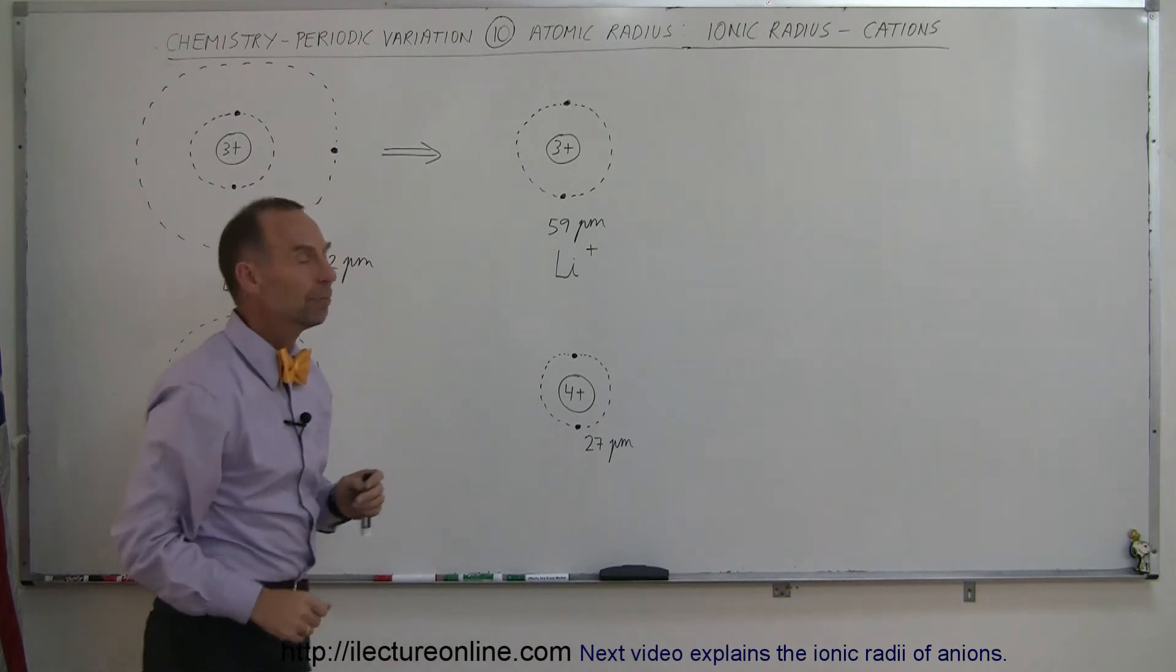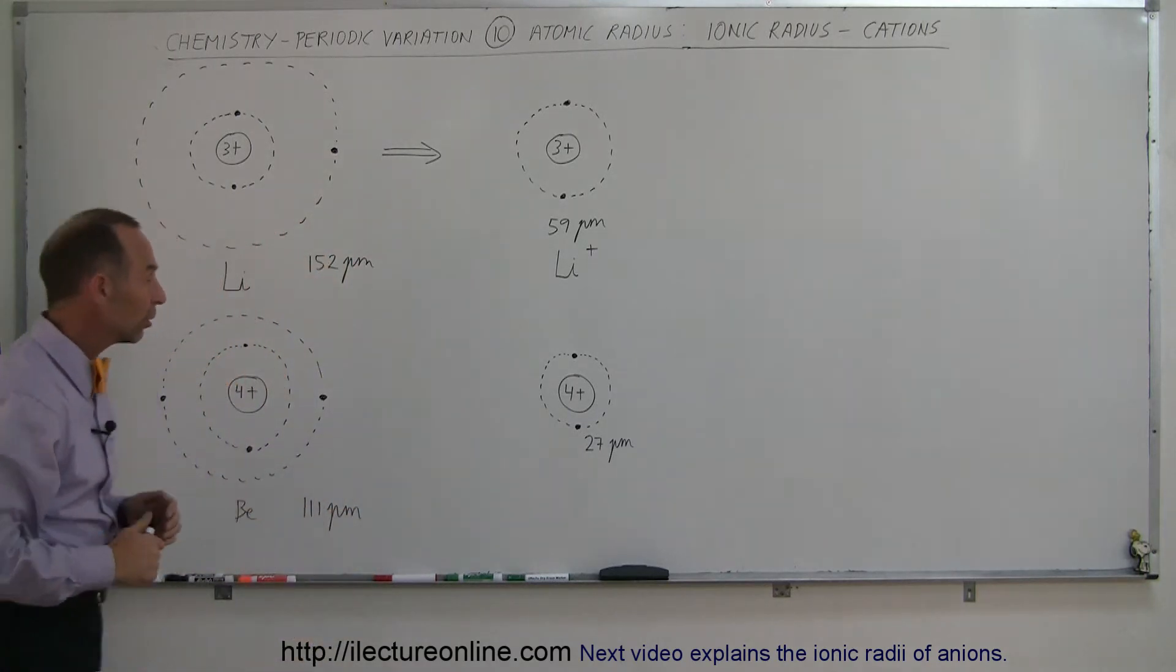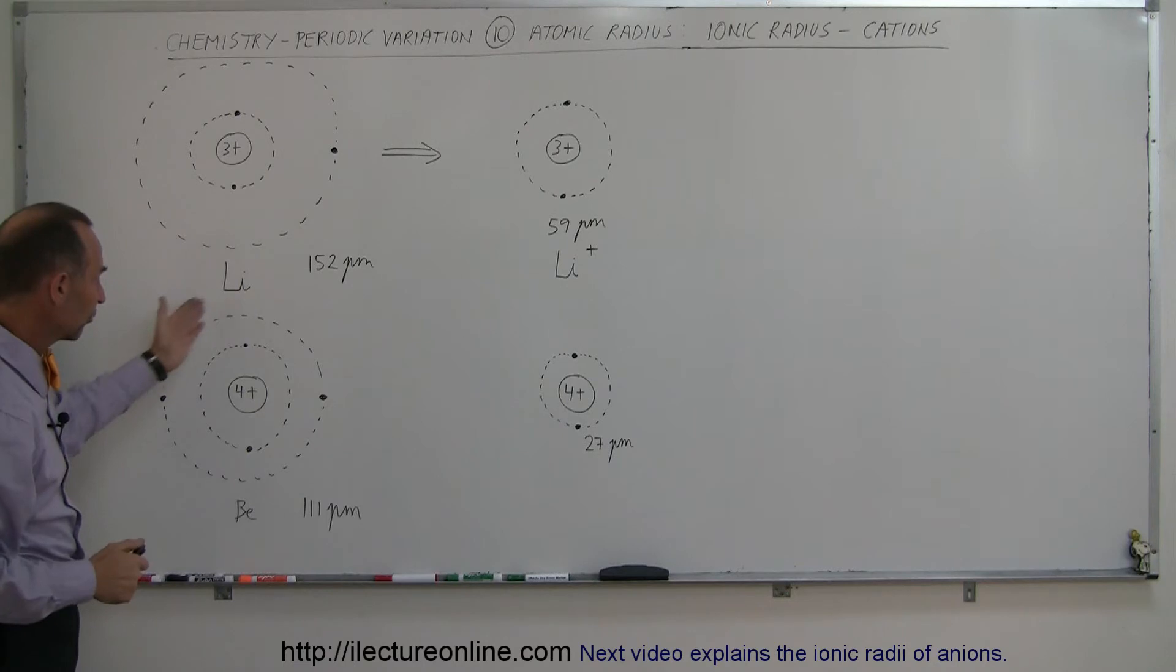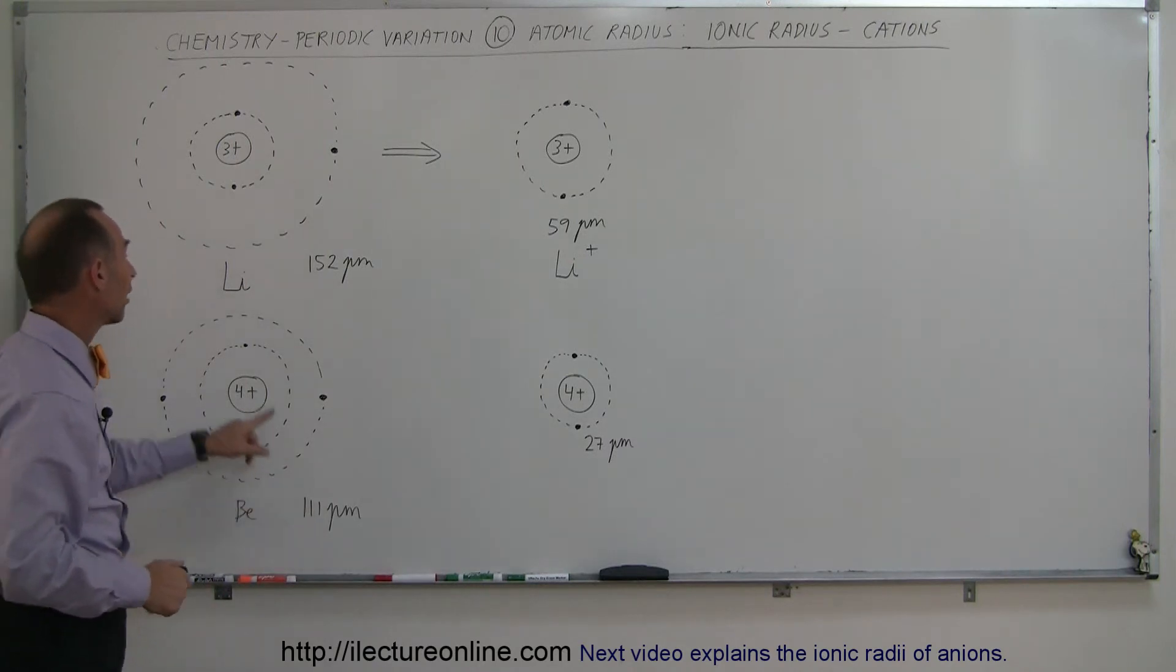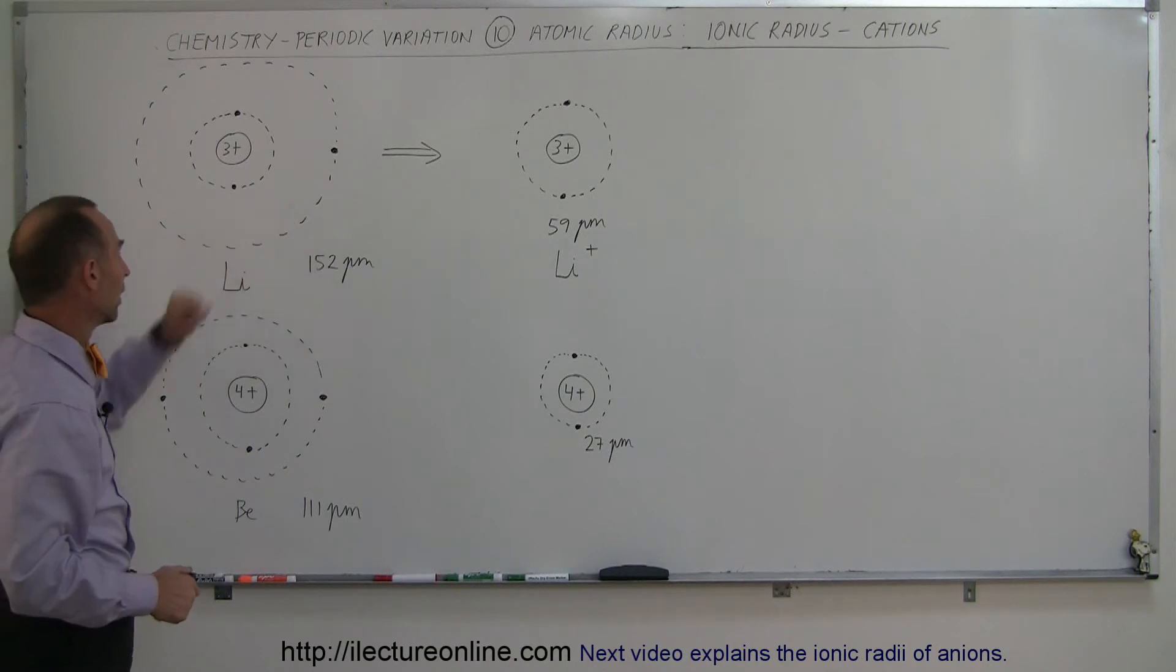Now let's take a look at beryllium, which is the next element on the periodic table. It has four electrons, two in the innermost energy level, two in the second energy level. And so the radius of beryllium is 111 picometers, as opposed to 152 for lithium.